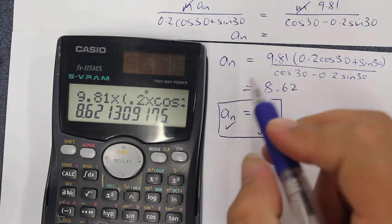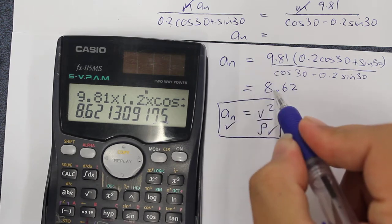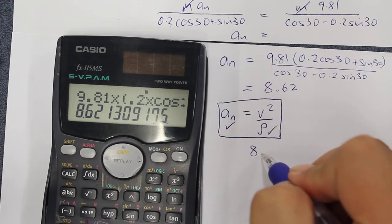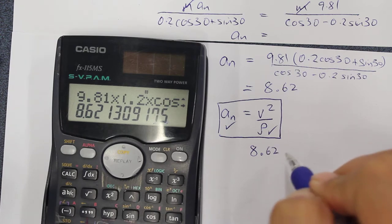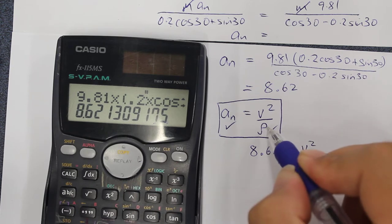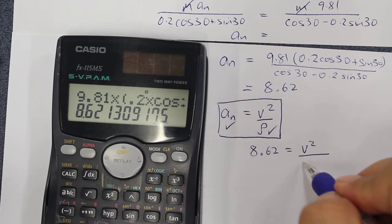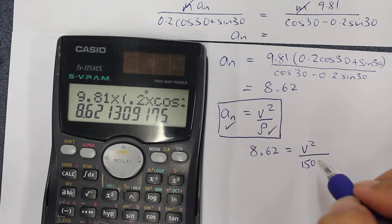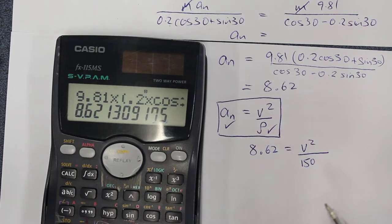We have acceleration in the normal direction of 8.62, and this is equal to our velocity squared divided by our radius. That was 150 as shown in the question above.